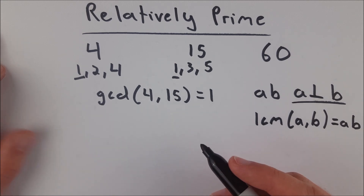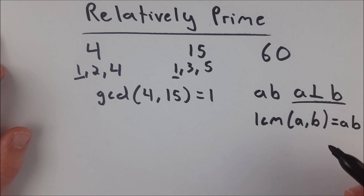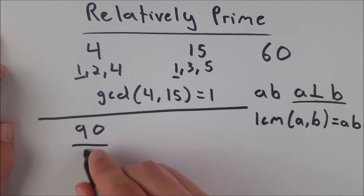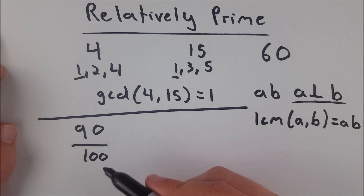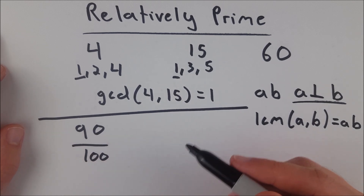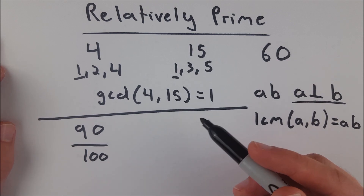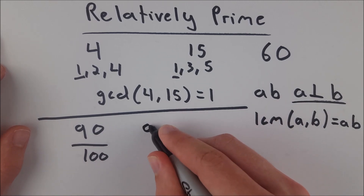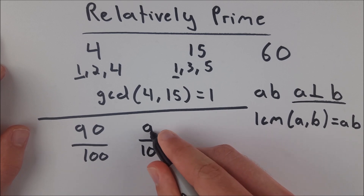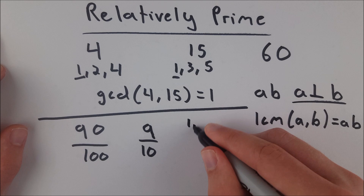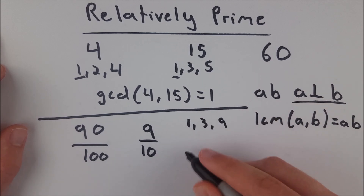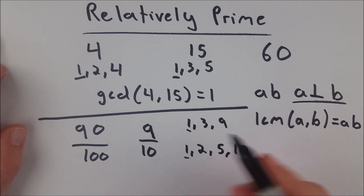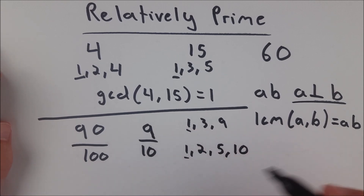You also see relatively prime numbers when you're trying to reduce a fraction. If we have a fraction like 90 divided by 100, these numbers are not relatively prime because 10 divides both numbers — they have a common factor greater than one, which is 10. So if we divide them both by 10, reducing the fraction, we get 9 divided by 10. Now neither of these numbers are prime, but because they have no common factors other than one, they are relatively prime and therefore this fraction is fully reduced.